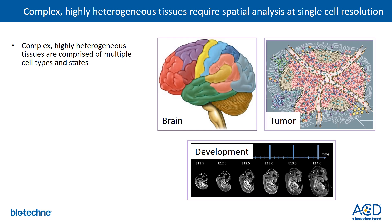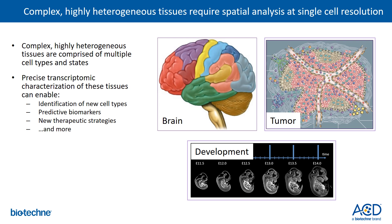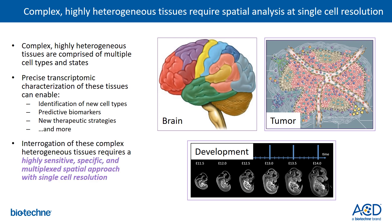For many tissues, such as the brain, tumor, and developing embryos — these are complex, highly heterogeneous tissues comprised of multiple cell types and states. While these tissues have been analyzed at the DNA and protein levels, analyzing at the transcriptomic or RNA level can really help enable identification of new cell types, predictive biomarkers, new therapeutic strategies, and beyond. However, interrogation of these complex heterogeneous tissues at the transcriptomic level really requires a highly sensitive, specific, and multiplex spatial approach with single-cell resolution.